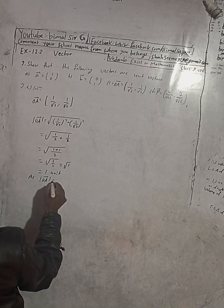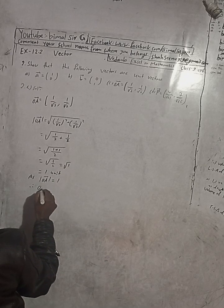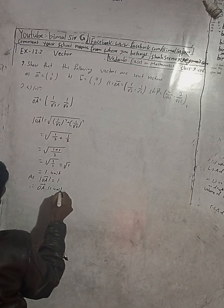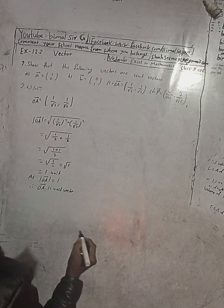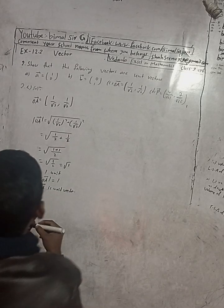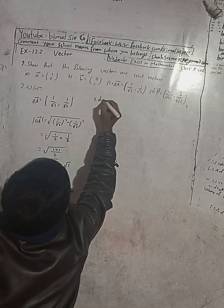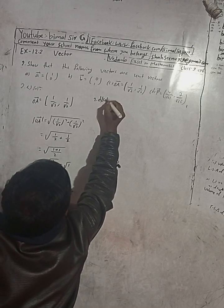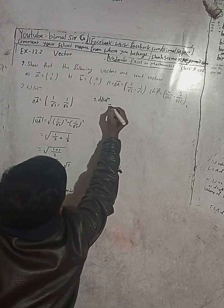So this is equal to 1, therefore vector OA is a unit vector. Now for part D.